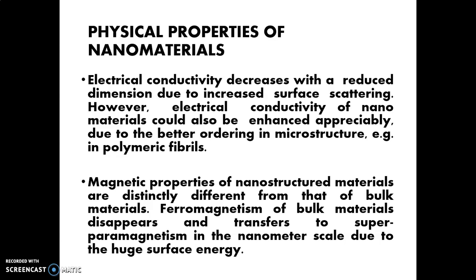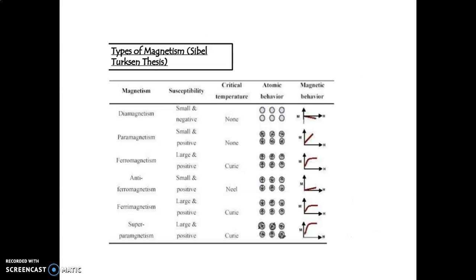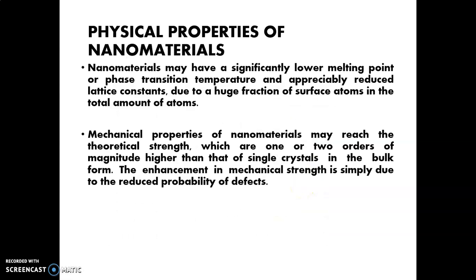Magnetic properties of nanostructure materials are distinctly different from bulk material. Ferromagnetism of bulk material disappears and transfers to superparamagnetism at the nanometer scale due to the huge surface energy. Here, you can see the superparamagnetism and ferromagnetism curves. Both show the same magnetic behavior, but when you are changing that, the property will be changing.